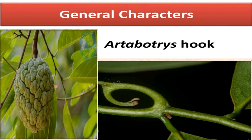General habit. Usually aromatic trees or shrubs, rarely liana-like woody climbers. An example is species of Artabotrys, which is a hook climber. Bark, leaves, and floral parts contain oil ducts.